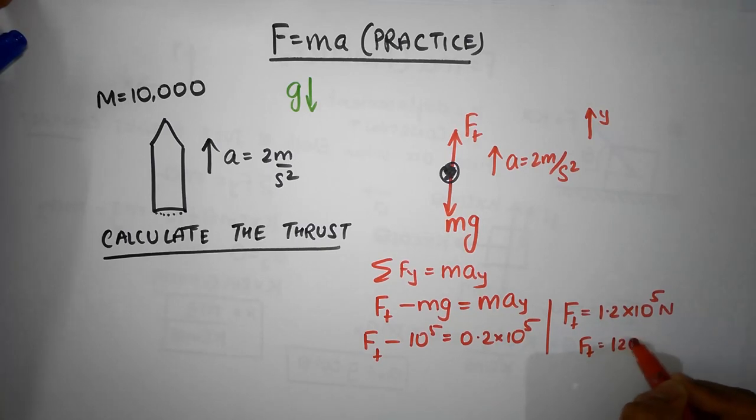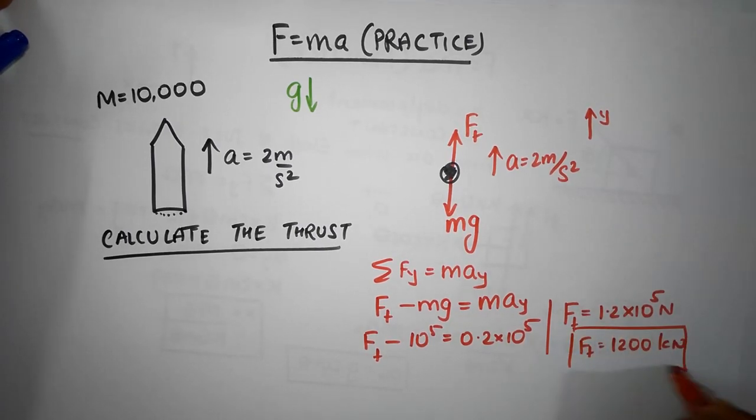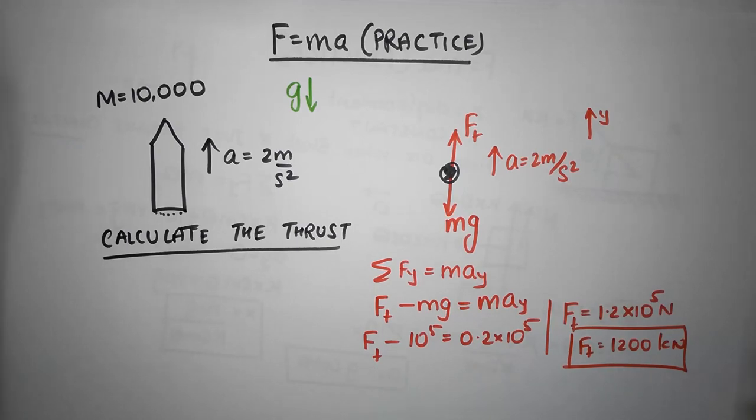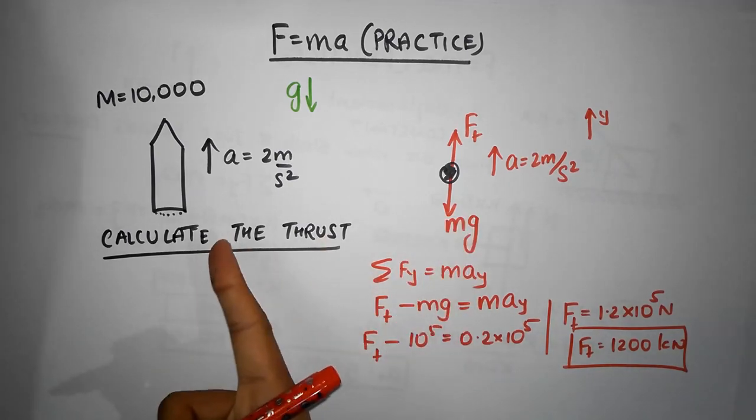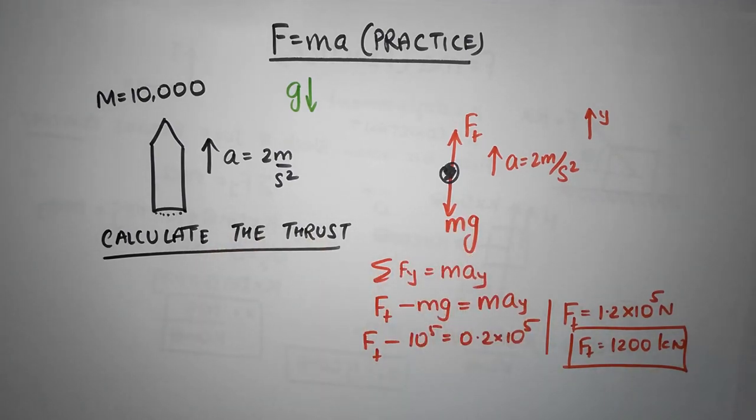That's the thrust force which is needed or which is delivered to the rocket itself. Another example of F equals ma.